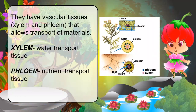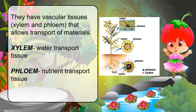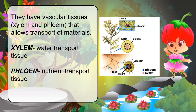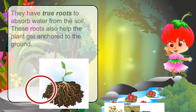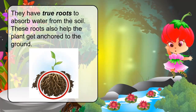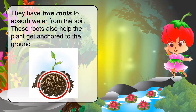Terrestrial plants have vascular tissues called xylem and phloem that allow transport of materials. Xylem is the water transport tissue, and phloem is the nutrient transport tissue. Terrestrial plants also have true roots to absorb water from the soil, and these roots help the plant get anchored to the ground.